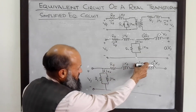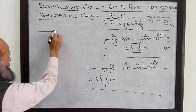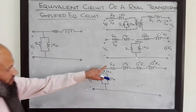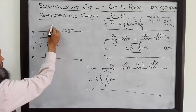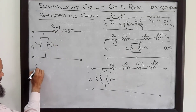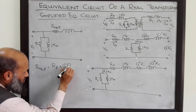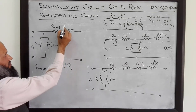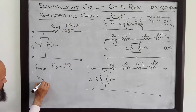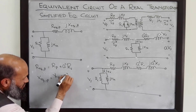Now we can lump this resistance and this resistance together to have a simplified equivalent electrical circuit of a transformer. The sum of these resistances is denoted by R equivalent referred to the primary circuit, where R equivalent referred to the primary side equals Rp plus A squared times Rs. Similarly, this is jX equivalent referred to the primary side, where X equivalent referred to the primary side equals Xp plus A squared times Xs.